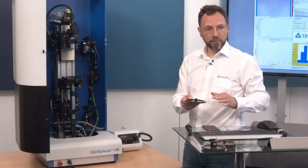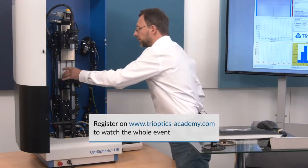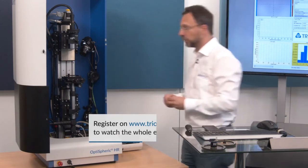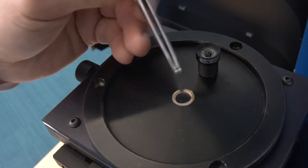Short EFL 1.8 mm approximately and we can put the sample holder here inside. We have a plant barrel plate, I need a tweezer to put it in. Like this.